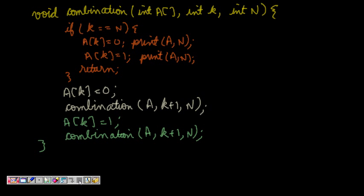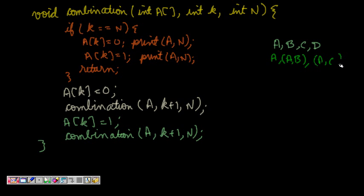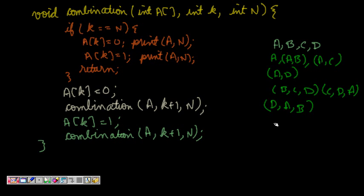This question asks us to find all possible combinations of a given string — a very important interview question. If I am given the string 'abcd' with four characters, I have to find all possible combinations: selecting one, two, three, or four elements. Combinations can be {a}, {a,b}, {a,c}, {a,d}, size-three sets like {b,c,d}, {c,d}, {a,d}, {a,b}, and all four together.